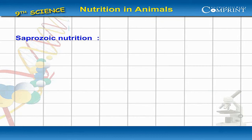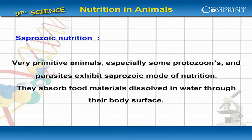Saprozoic nutrition. Very primitive animals, especially some protozoans and parasites, exhibit saprozoic mode of nutrition. They absorb food material dissolved in water through their body surfaces.